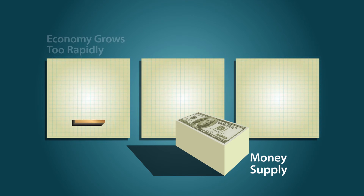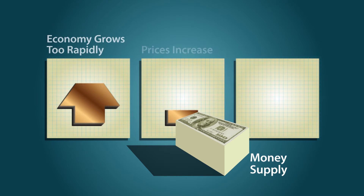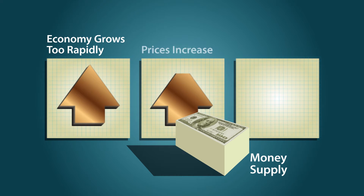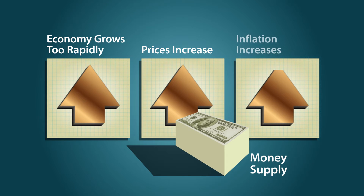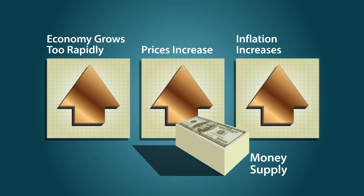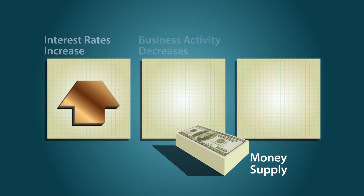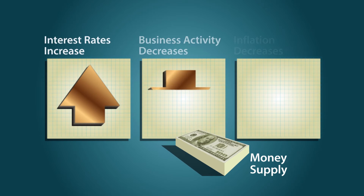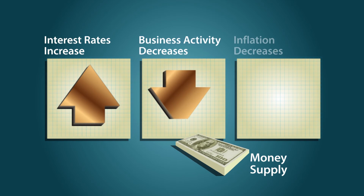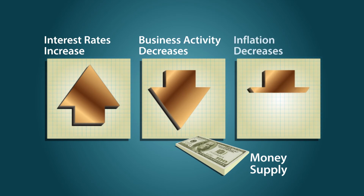But in the opposite situation, suppose the economy is growing so fast that it causes inflation to rise. Then the Fed could adjust monetary policy the other way and reduce the money supply, leading to higher interest rates, a cooling off of the economy, and lower inflation.